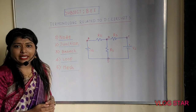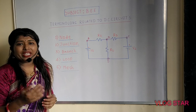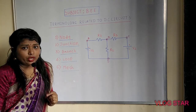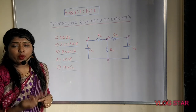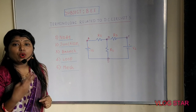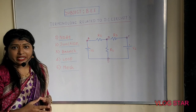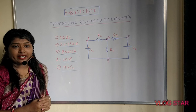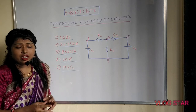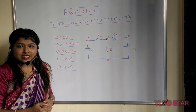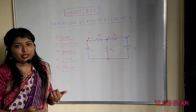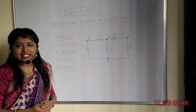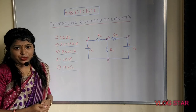What is basically a node? Node is a point where two or more circuit elements are joined together, or we can say connected together. The circuit elements in a circuit could be resistors, voltage sources, or current sources.